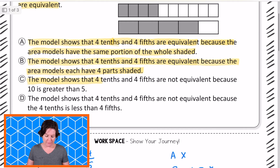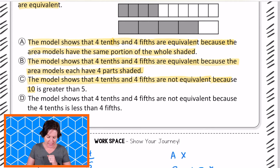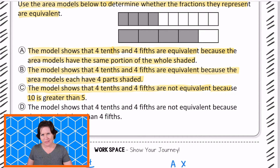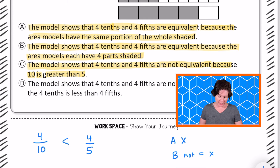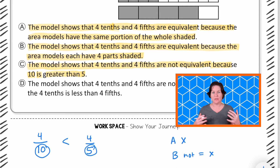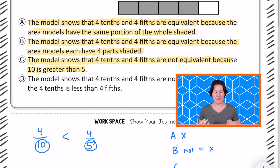Answer C says the model shows that 4 tenths and 4 fifths are not equivalent because 10 is greater than 5. Well, is 10 greater than 5? Yes. But does that have to do with this? No. It's about the amount that is shaded in. Remember that 4 tenths is actually less than 4 fifths. So saying 10 is greater than 5 is not really the part we're considering — we're considering the numerators and how big the pieces are. So no, not C.